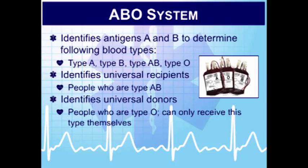The ABO blood system: on blood cells there are A antigens and B antigens, which determine blood type. Patients can be type A, type B, type AB, or type O. There's also an RH factor and a human leukocyte antigen (HLA) blood group. When typing and crossing a patient in the hospital, identifying the ABO group is the most important step so compatible blood can be given. This is critical — giving incompatible blood can cause hemolysis, destroy red blood cells, and can kill patients.